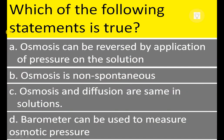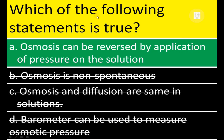Next question: which of the following statements is true? Osmosis can be reversed by application of pressure on the solution — yes. Osmosis is non-spontaneous — no. Osmosis and diffusion are the same in solution — no, these things are not the same. Barometer can be used to measure osmotic pressure — no. Therefore, A is the correct answer.